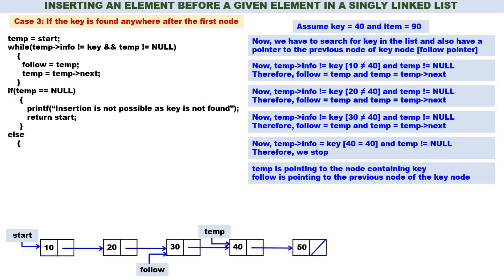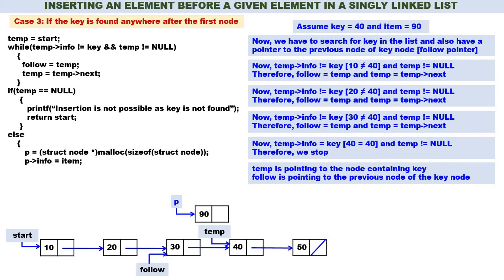When the key is found, temp is pointing to the node containing key (node 40) and follow is pointing to the previous node (node 30). We create a new node pointed by P, set P->info = item (which is 90). Then follow->next = P and P->next = temp. You can see 90 is inserted before 40, that is in between 30 and 40. Case 3 logic is quite simple.